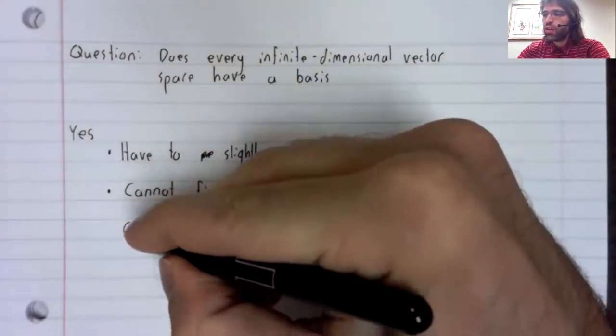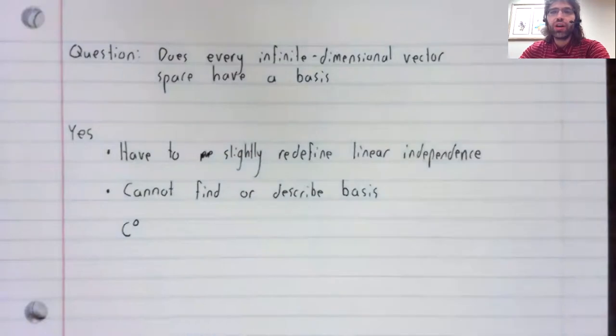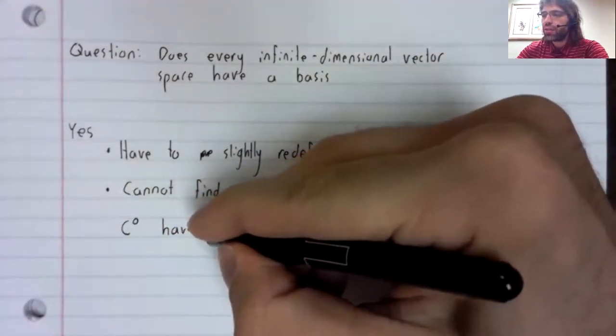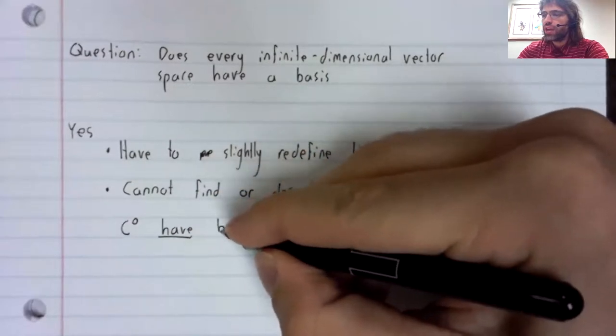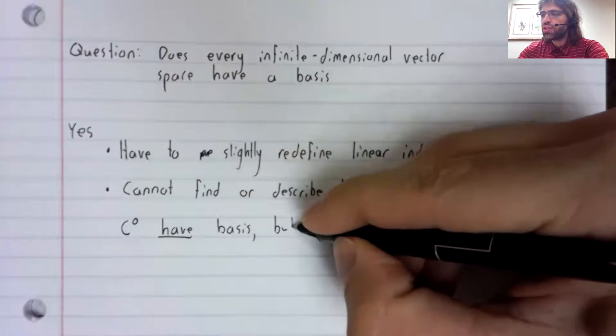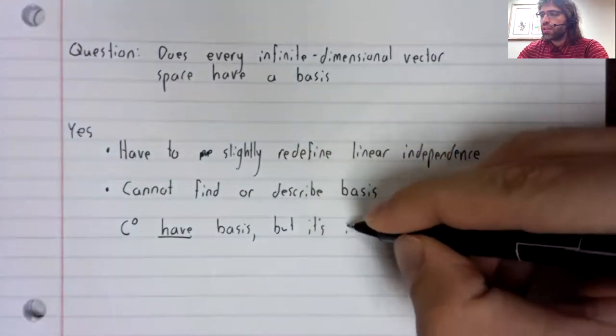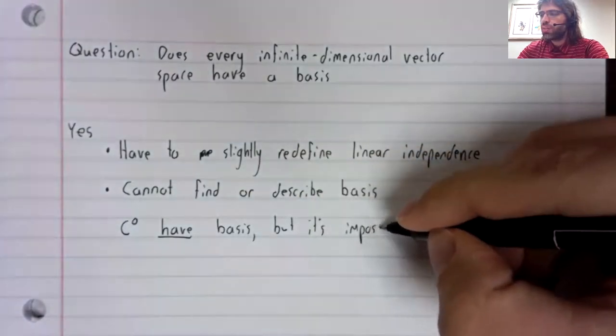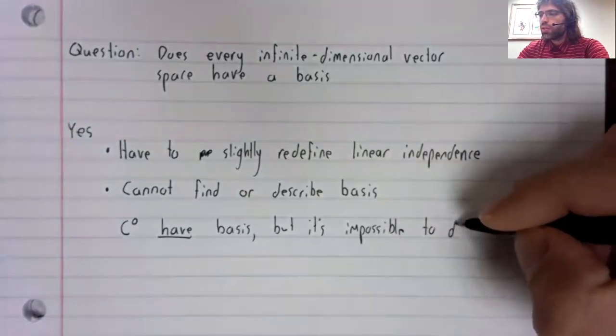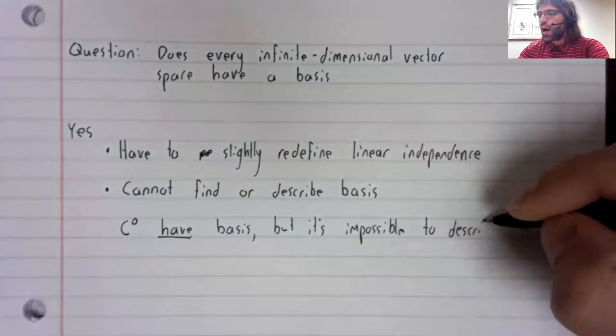For example, the continuous functions have a basis, but it's impossible to describe a basis.